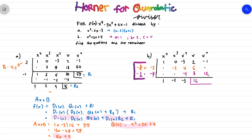We can conclude that the quotient is degree 2 with coefficients: 1 for x squared, minus 2 for x, and minus 3 as the constant — giving x squared minus 2x minus 3. The remainder is 16x plus 11, consistent with the result from Part A.